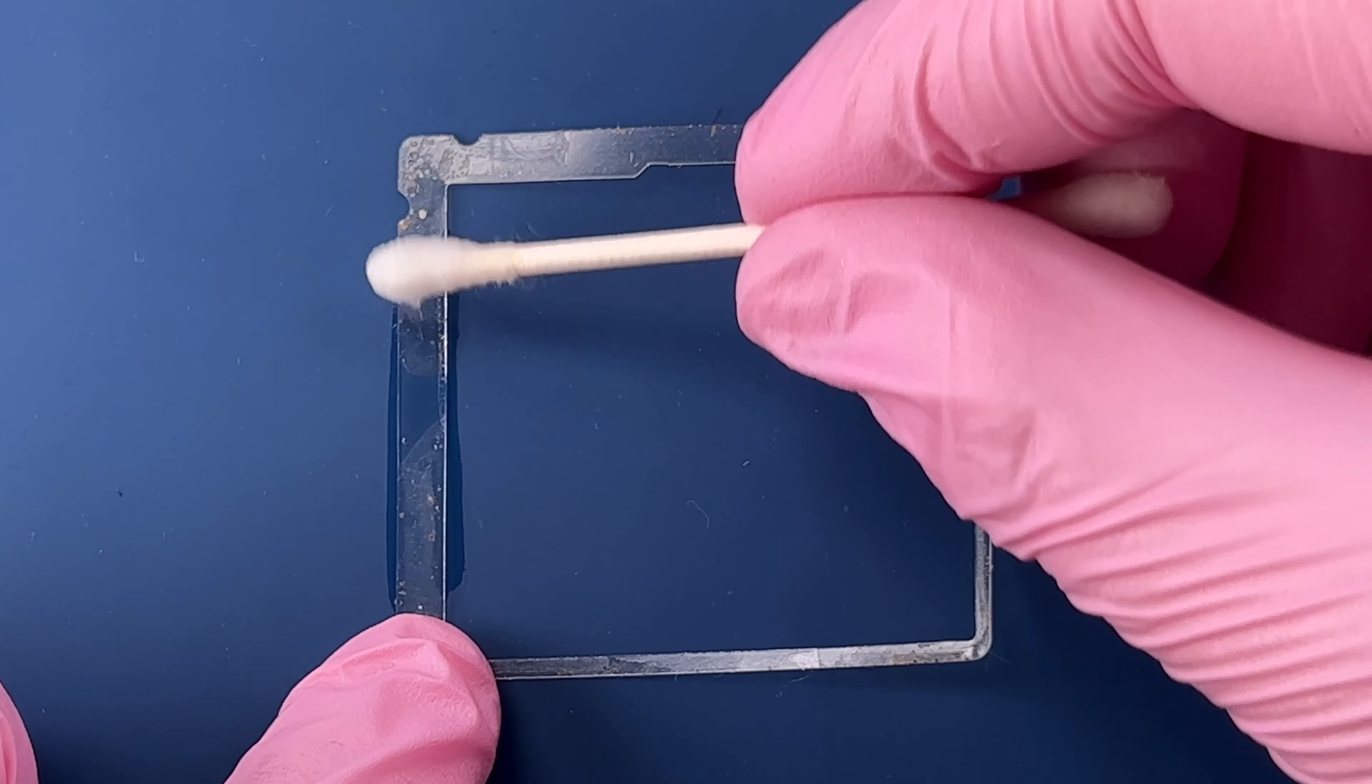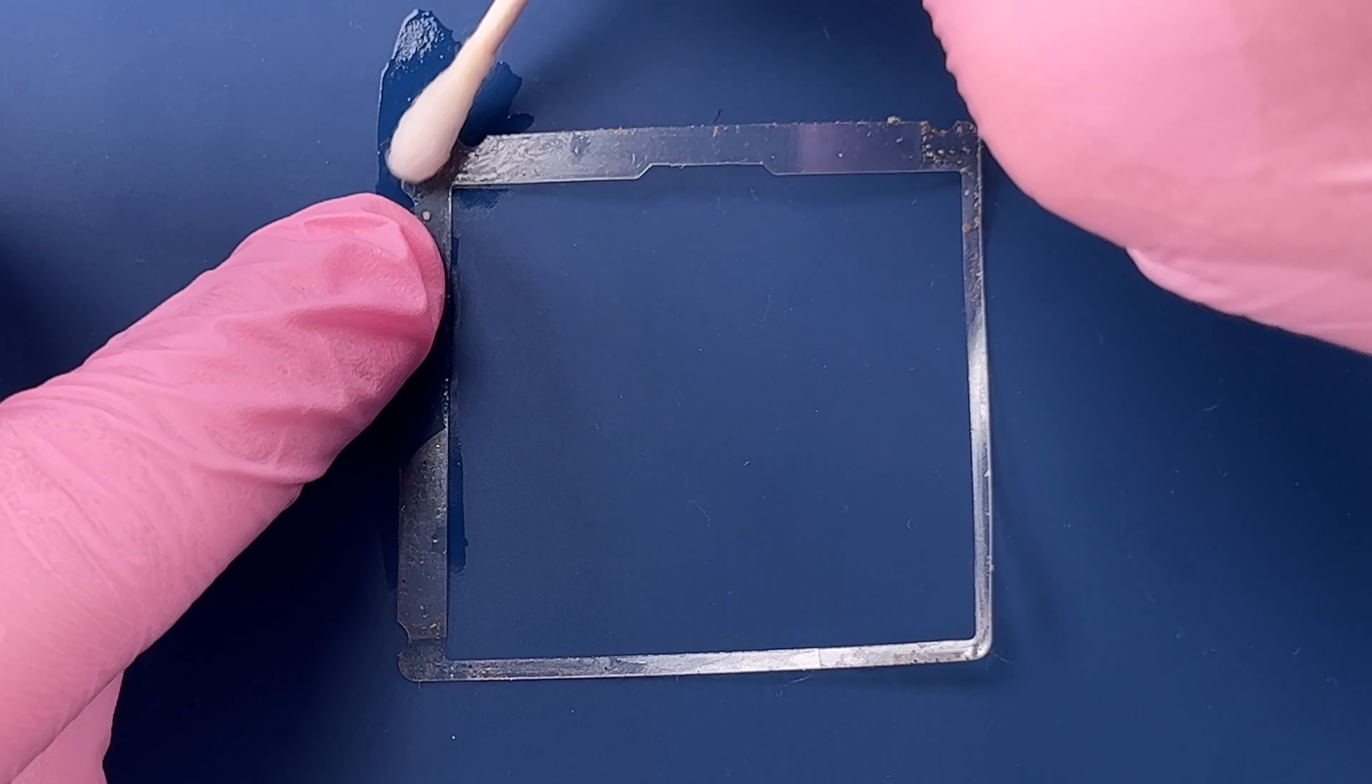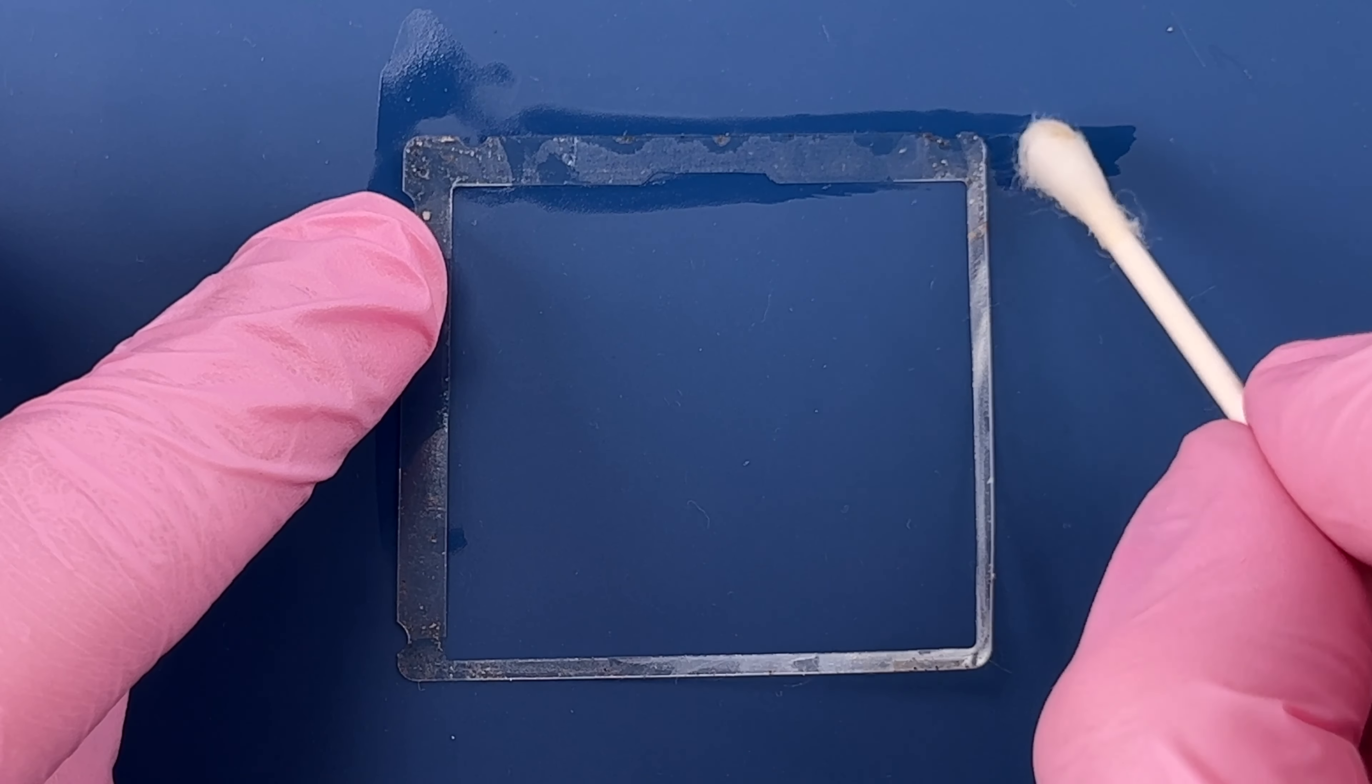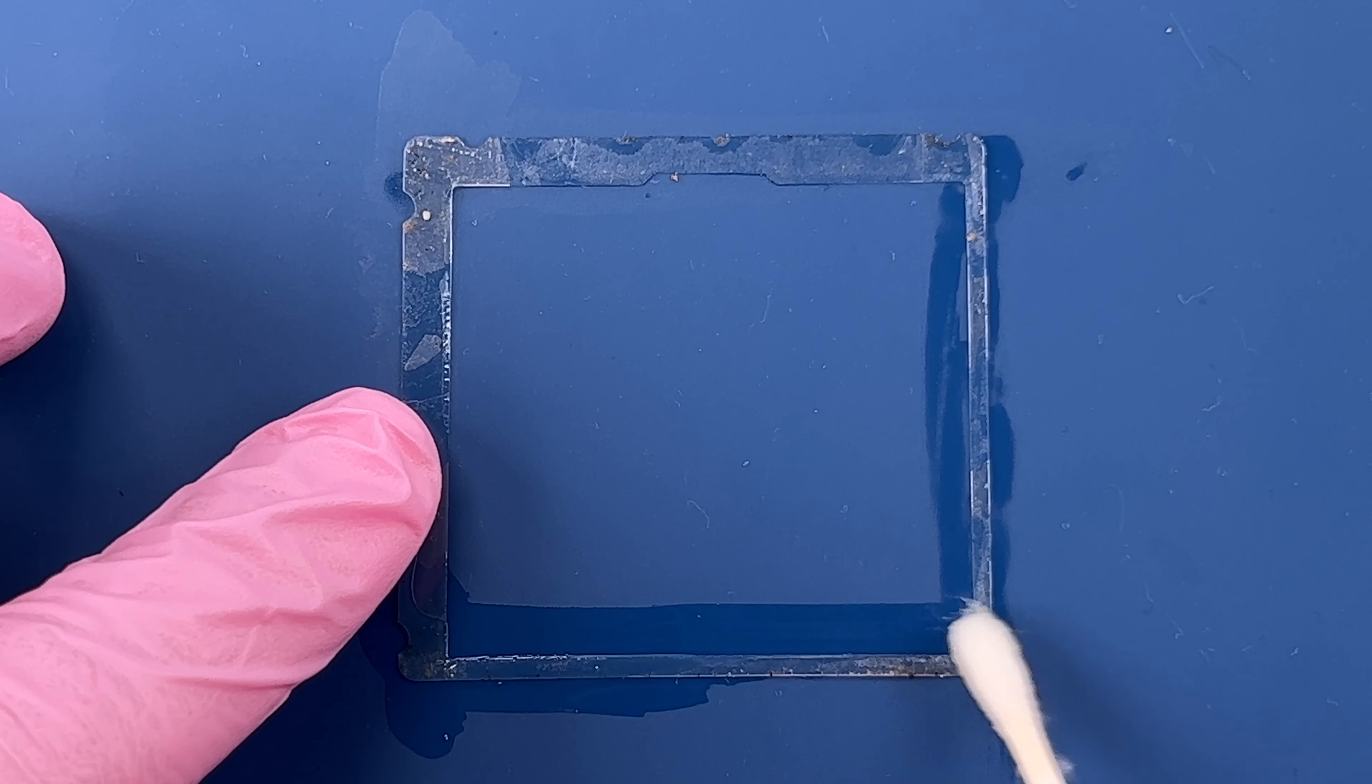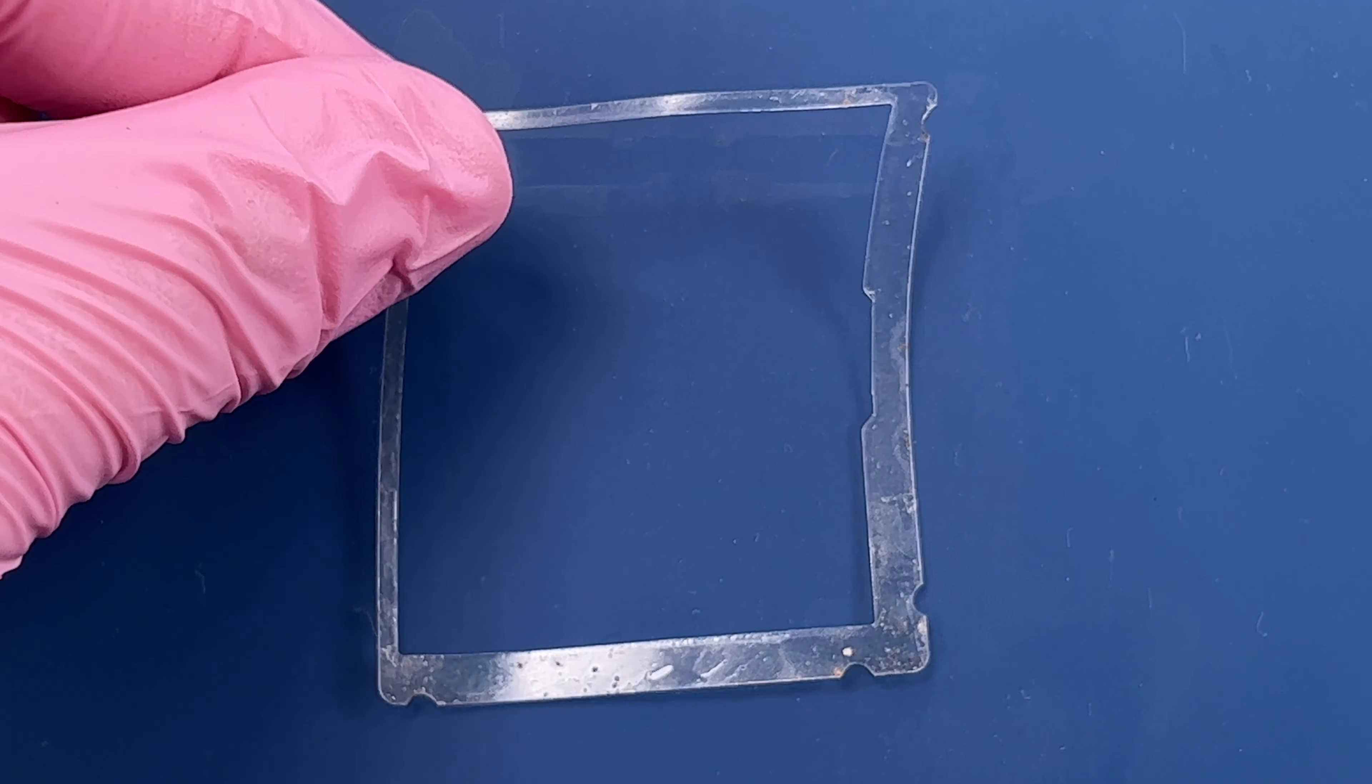I am using my Q-tip with my isopropyl alcohol here. The one thing I'm going to note is that I'm using very light pressure. Don't go too hard with this Q-tip, I don't want to scratch this screen. This is the screen that's underneath the screen protector that you actually have on the outside of the Game Boy. Again, very light pressure with my microfiber cloth. I just want this nice and clean and I'm happy with that.